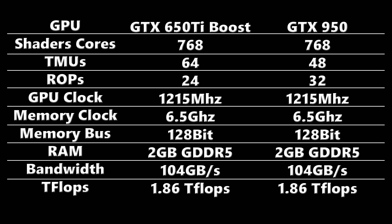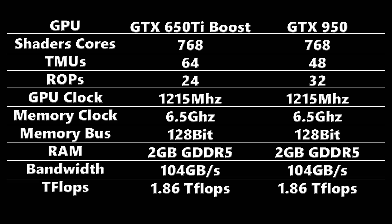GPU clock on both of them were set to 1215 MHz and 6.5 GHz on the memory, leading to 104 GB per second on memory bandwidth and 1.86 teraflops between the two of them. These GPUs are virtually identical as far as speed goes — they both have 2 GB of GDDR5 and we clocked them at the same speeds. We're running the same tests where we're not pushing past the 2 GB barrier, so we don't have any memory limitations, because memory compression would actually become a factor — which is technically part of the architecture but not something we want to test. We want an even fight and see what the difference in frame rates would be. So let's go ahead and check out those benchmarks.